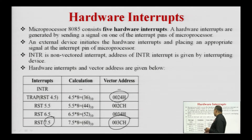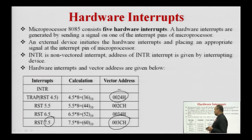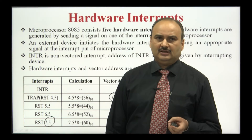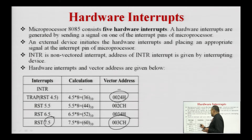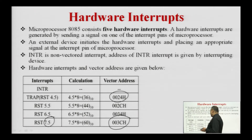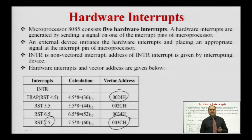INTR is a non-vector interrupt — the vector address for INTR is given by the interrupting device. The vector addresses of the hardware interrupts are obtained by multiplying the corresponding interrupt number by 8. It is required to remember that INTR is a non-vector interrupt, and the vector address of the INTR interrupt is provided by the interrupting device.